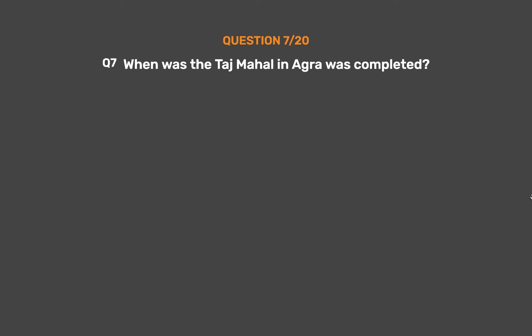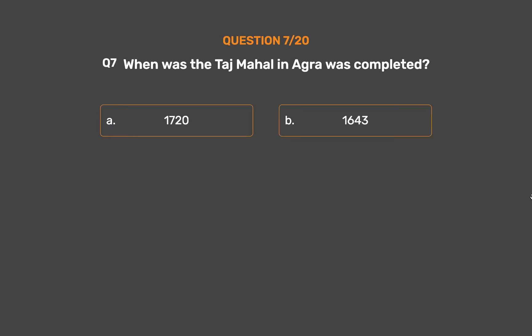Question No. 7: When was the Taj Mahal in Agra completed? Option A: 1720. Option B: 1643. Option C: 1667. Option D: 1665.